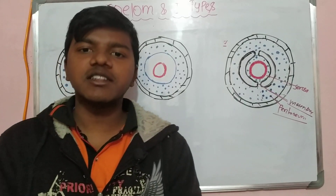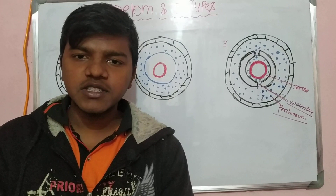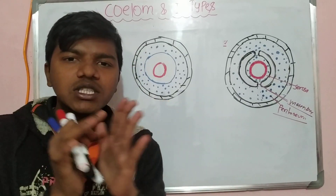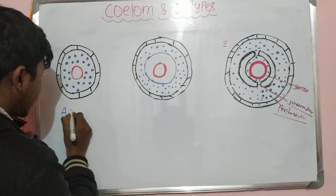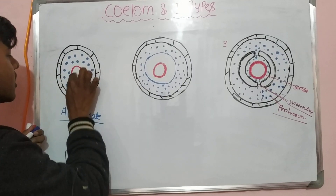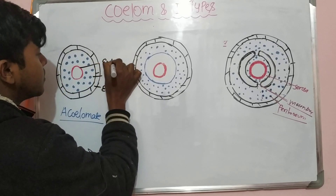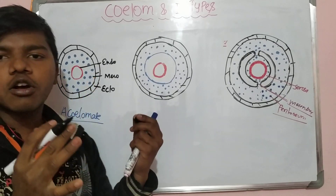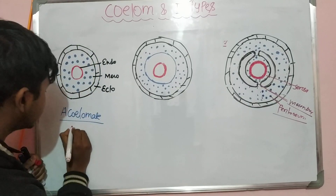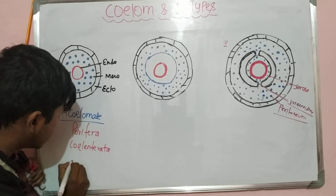In lower organisms like porifera, coelenterata, and platyhelminthes, organs are not present or very scarce, so they do not require a silem. In these organisms all the germ layers — ectoderm, mesoderm, and endoderm — are closely packed to each other with no space between them. This condition is known as acoelomate, meaning absence of silem. We can see the ecto, mezzo, and endo layers are compactly arranged with no expression of space, and that is why it is known as acoelomate. This is present in porifera, coelenterata, and platyhelminthes.